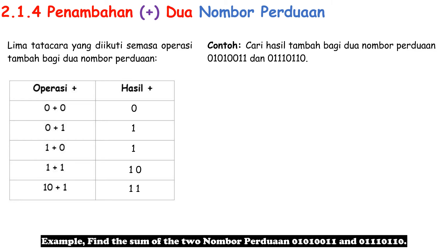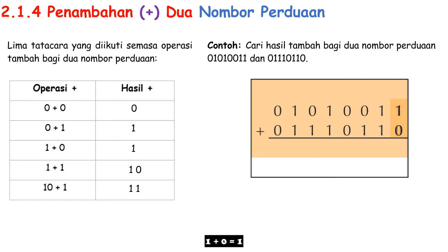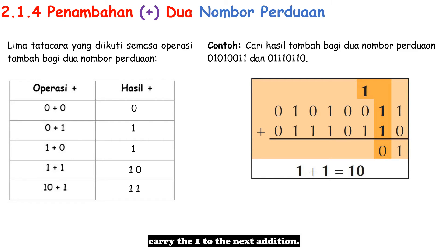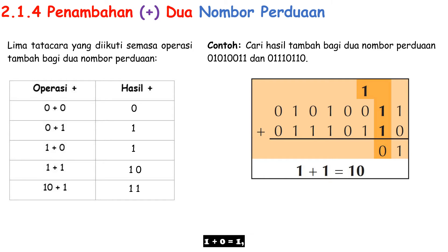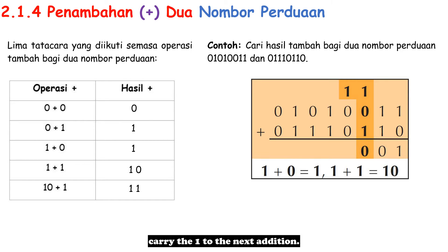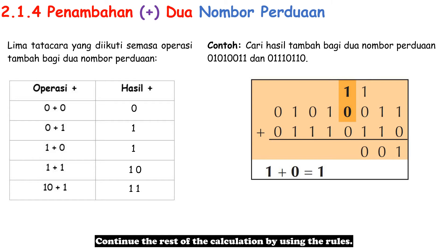Example: find the sum of the two Nombor Perduaan 01010011 and 01110110. Starting from the rightmost digit: 1 + 0 = 1; 1 + 1 = 10, carry the 1 to the next addition. Continue the rest of the calculation using the rules.